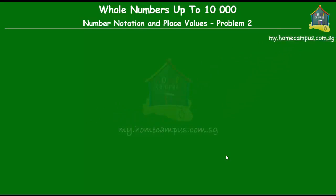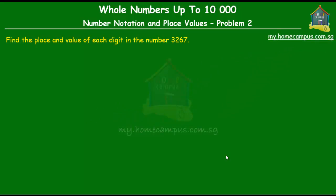Hello and welcome to my.homecampus.com.sg. Let's learn about number notation and place values. The problem given to us is: find the place and value of each digit in the number 3267.